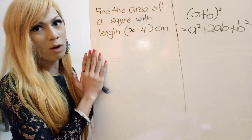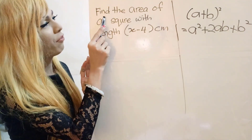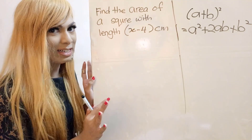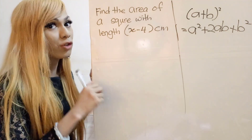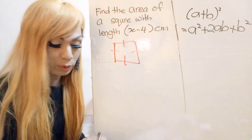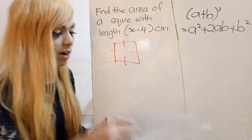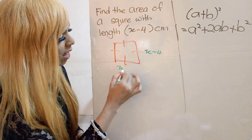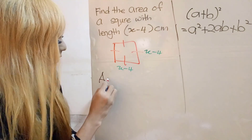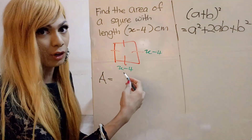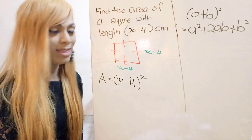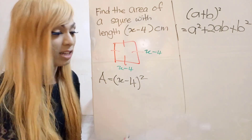Now let's look at a problem-solving question: find the area of a square with side length (x minus 4) cm. We can draw a square where all sides equal x minus 4. The area of a square is length times height, and since both sides are equal, the area is (x minus 4) squared. If you already know the binomial formula, you can get the answer in one line.